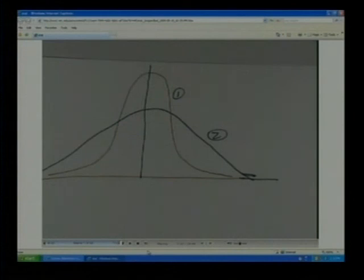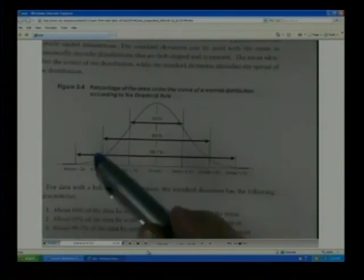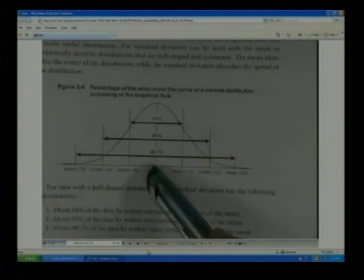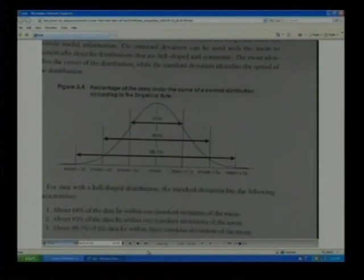So a couple more facts about the z-scores or the distributions here. This is the percentage of the area under the curve of the normal distribution. This is a standard deviation. From here to here is one standard deviation. From here to here is one standard deviation. So within one standard deviation of the mean, with a normal curve, we have 68% of the area. 68% of the probability is there.